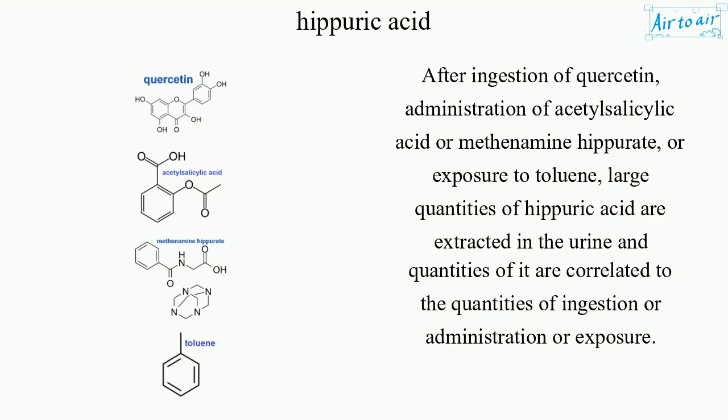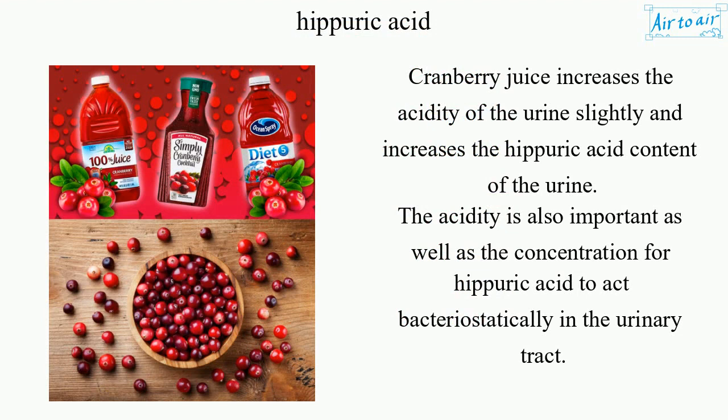After ingestion of quercetin, administration of acetylsalicylic acid or methenamine hippurate, or exposure to toluene, large quantities of hippuric acid are excreted in the urine, and quantities of it are correlated to the quantities of ingestion, administration, or exposure. Cranberry juice increases the acidity of the urine slightly and increases the hippuric acid content of the urine. The acidity is also important, as well as the concentration, for hippuric acid to act bacteriostatically in the urinary tract.